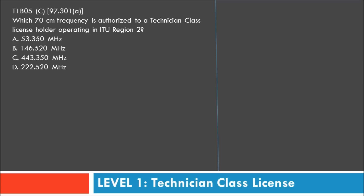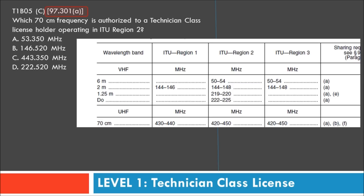Question five: which 70-centimeter frequency is authorized to a Technician class license holder operating in ITU Region 2? Again referencing the 97.301 chart, ITU Region 2 North America puts the 70-centimeter band in the 420 to 450 MHz range, making the answer C — 443.350 MHz.